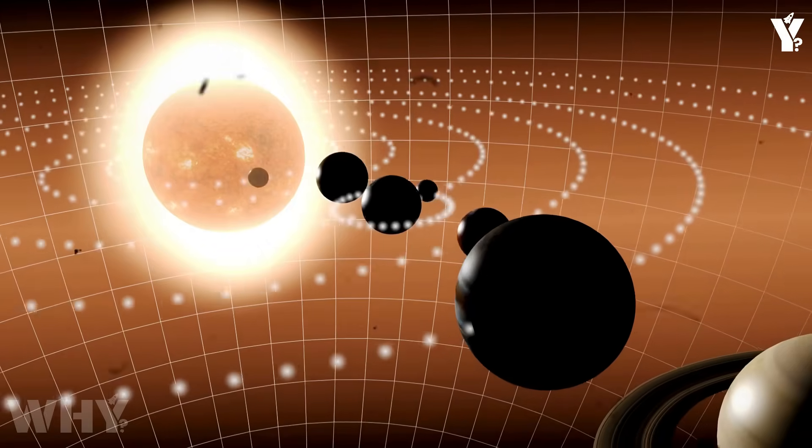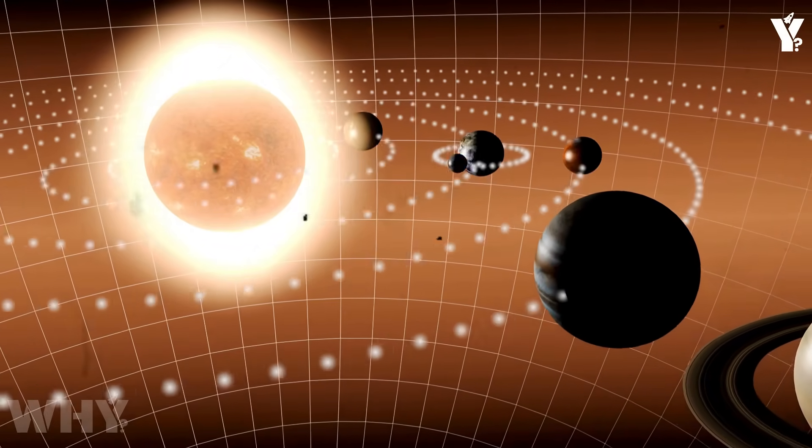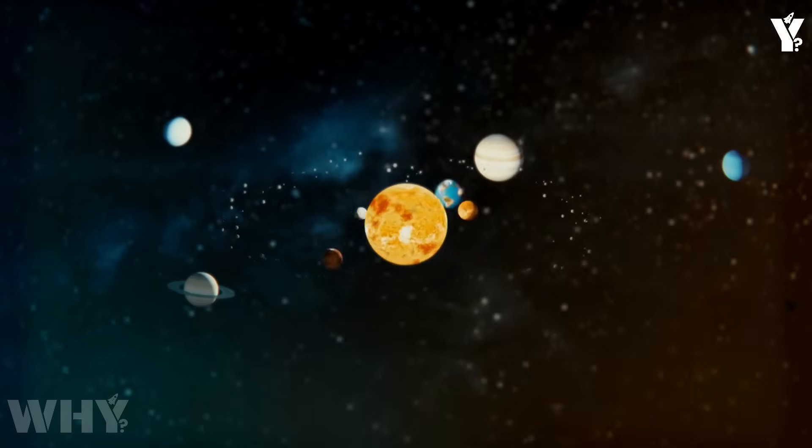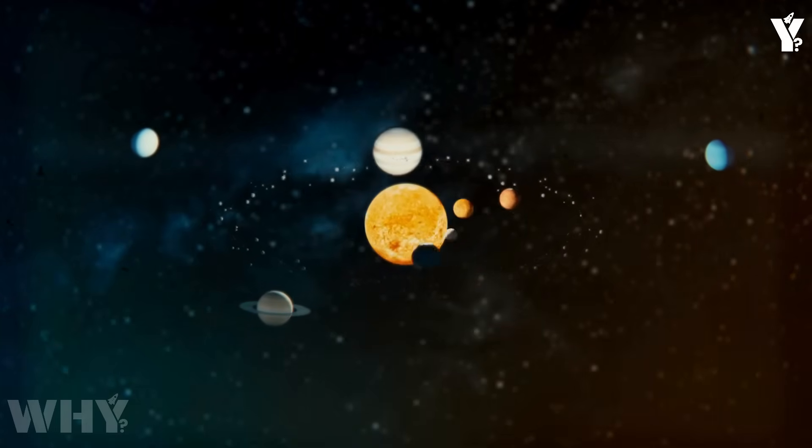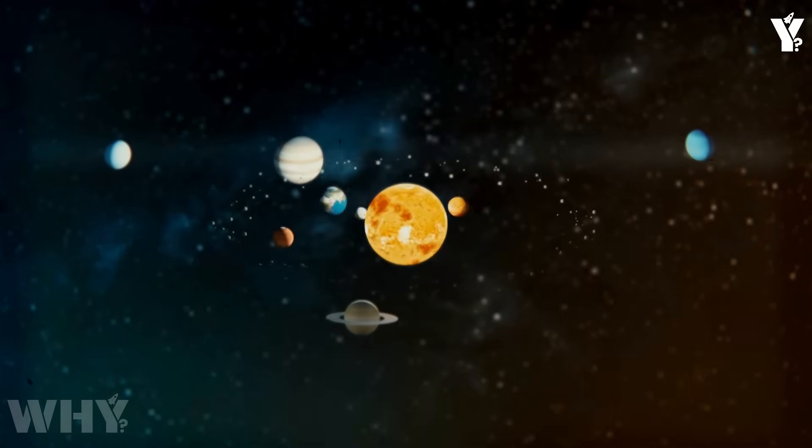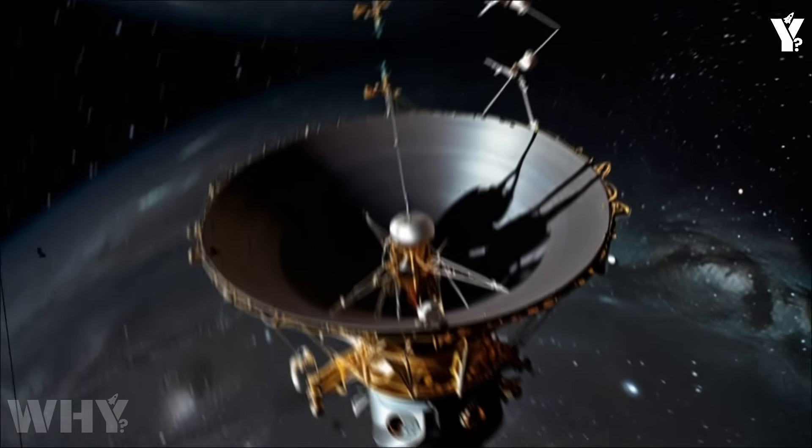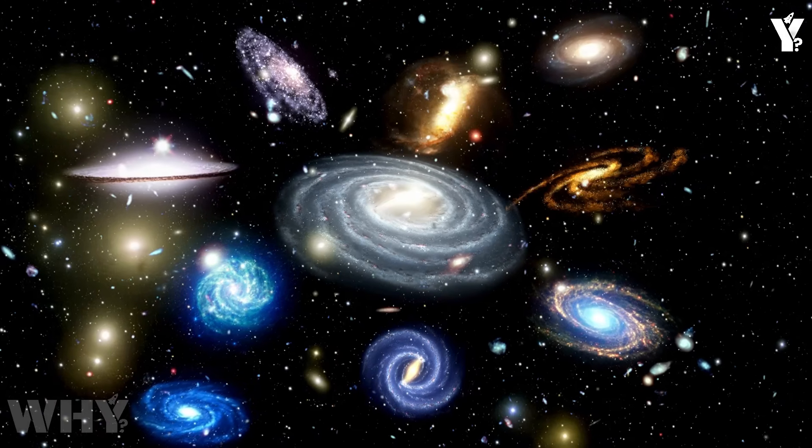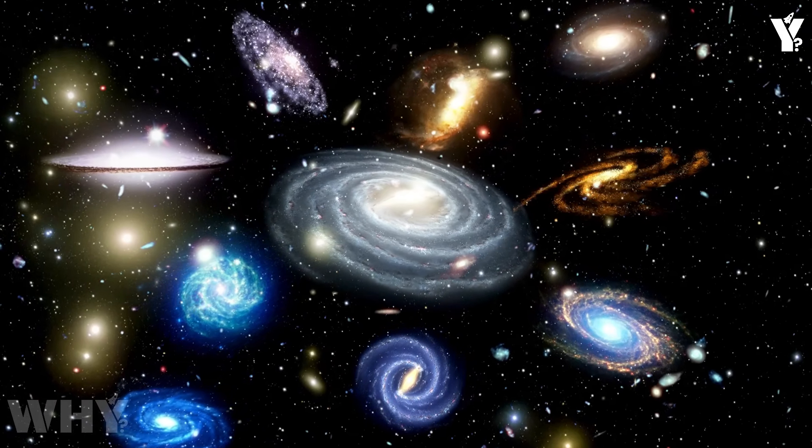From flybys of Saturn's moons to jaw-dropping photos of Jupiter's swirling storms, Voyager 1 delivered some of the most iconic moments in the history of space exploration. But none of those compared to what it's facing now, because now it's not just traveling through space, it's venturing into a domain we were never meant to observe. A place where the sun's influence ends, and something else begins.